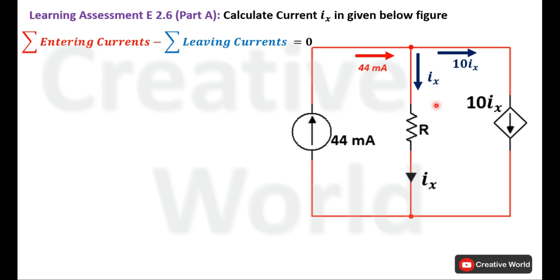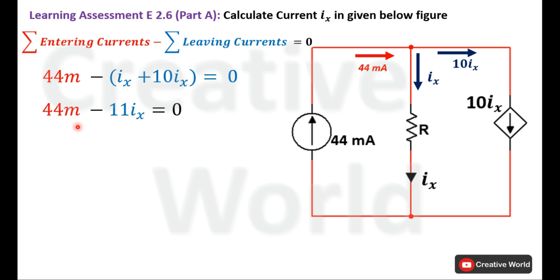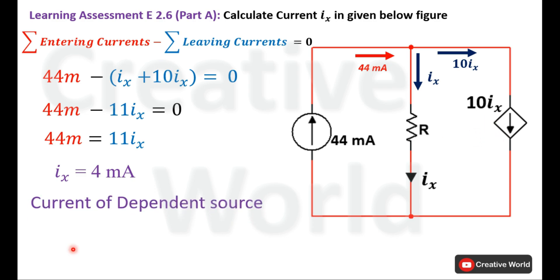Now we place these currents into the equation. 44 mA is the entering current, while Ix and 10Ix are leaving currents. Since both leaving currents contain the variable Ix, they add together, and the equation becomes: 44 mA − 11Ix = 0. Solving for Ix, we divide both sides by 11 and get Ix = 4 mA. We can also calculate the dependent source value: 10Ix = 10 × 4 mA = 40 mA.